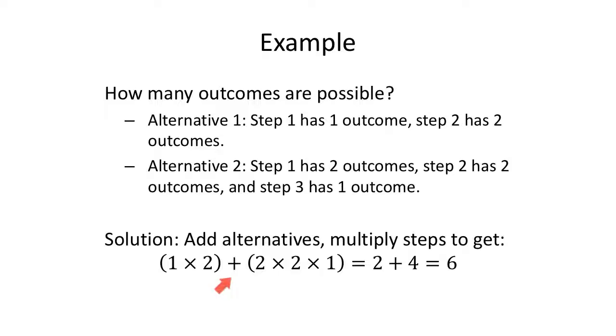My second alternative, my second option, so I'm going to add, is a sequence of steps. Step one has two outcomes, step two has two outcomes, step three has one outcome. So for alternative two, I'm going to have two times two times one. So four different outcomes possible. Alternative one has two outcomes. Alternative two has four outcomes. Because these are alternatives, I will add the results to get six total outcomes, even though individually they were a sequence to get those values. I use the word outcome too much. It gets confusing in my head as to what I said or not.